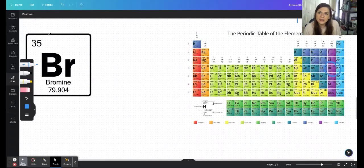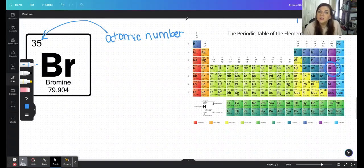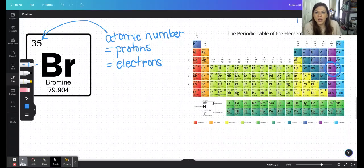Bromine is right here. So this number right here is, again, the atomic number. And for atoms, that will be equal to the number of protons and the number of electrons. So in bromine, we will have 35 protons and 35 electrons.